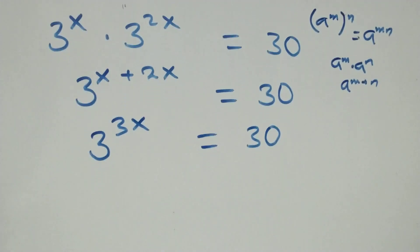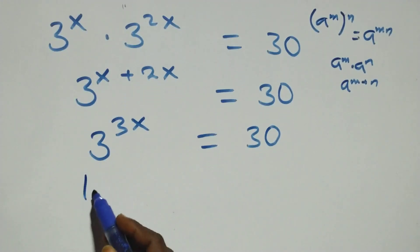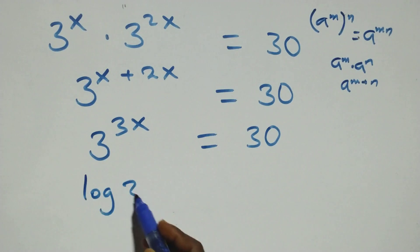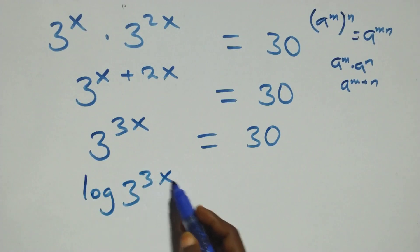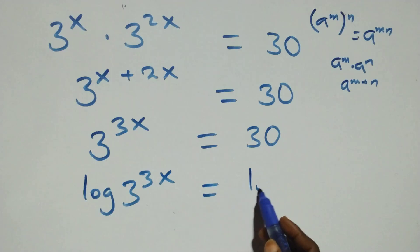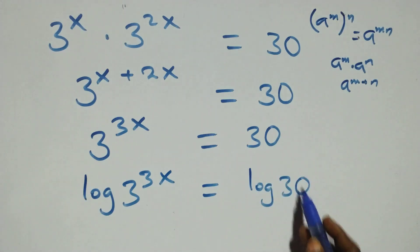Then here we take the log on both sides. That is, we have log 3 raised to power 3x equals log 30 on this side.